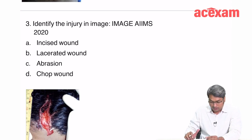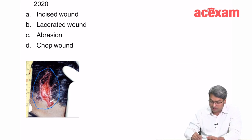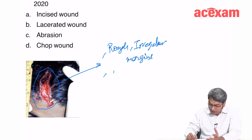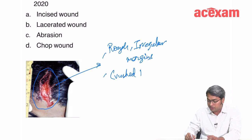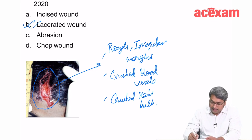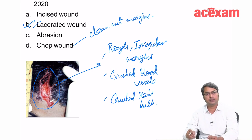The next image-based question from AIIMS 2020 asks to identify the injury. The image has rough, irregular margins, with crushed blood vessels and crushed hair bulbs visible underneath. Based on these features, this is a lacerated wound. An incised wound would not produce this, and a chopped wound produces clean-cut margins. The answer is lacerated wound.